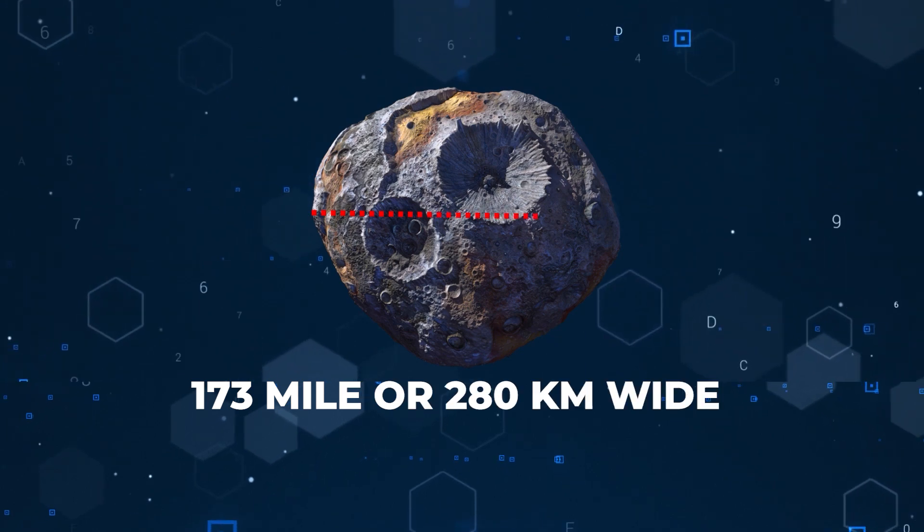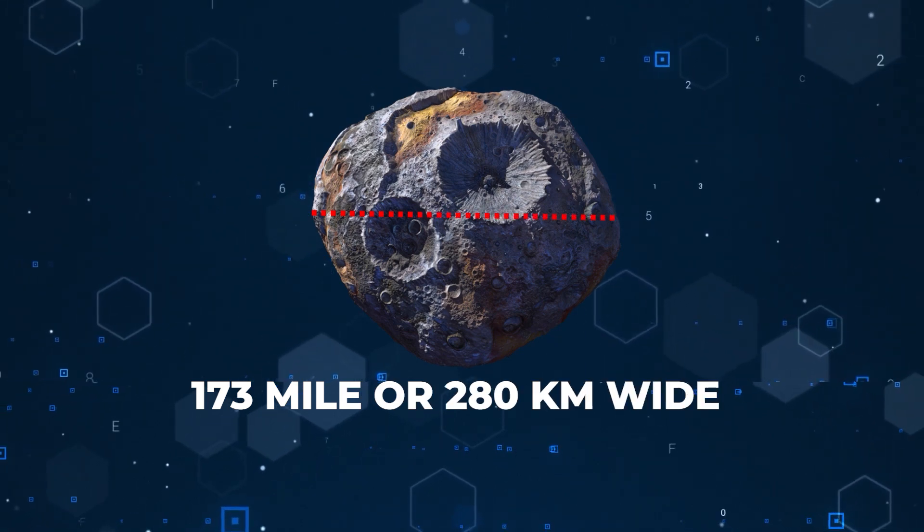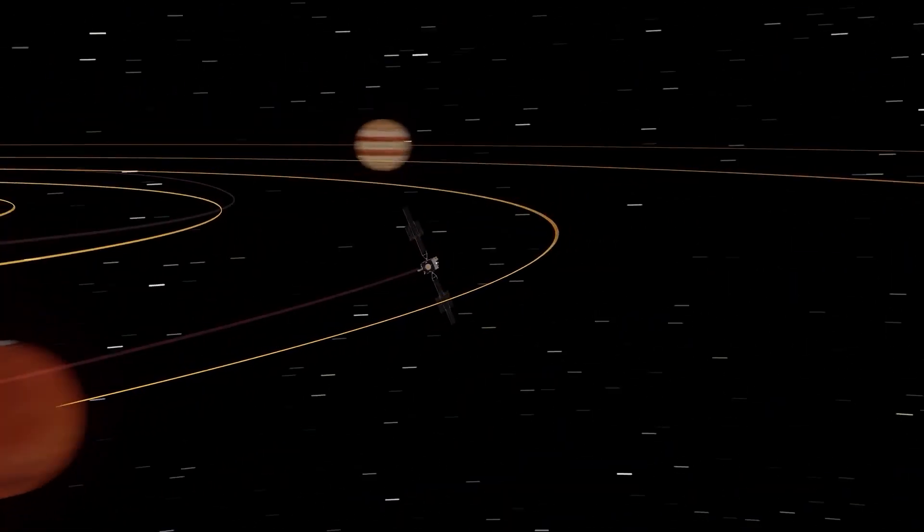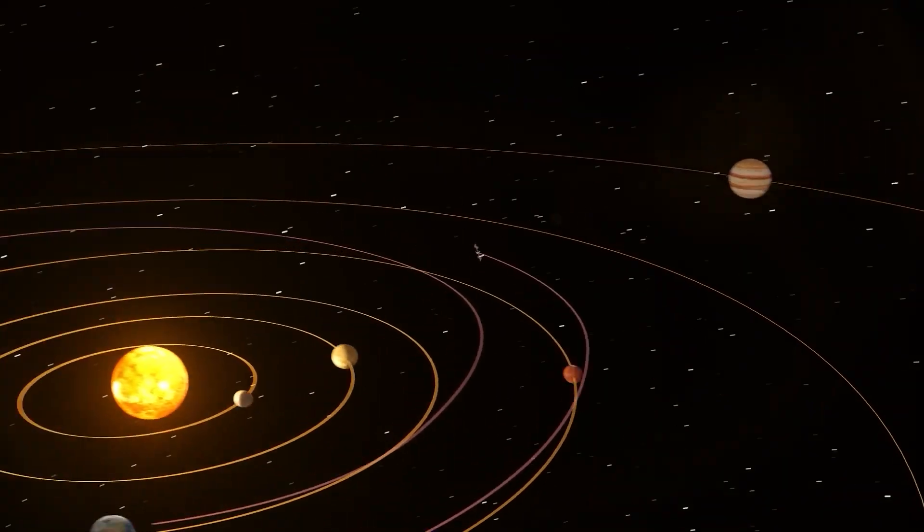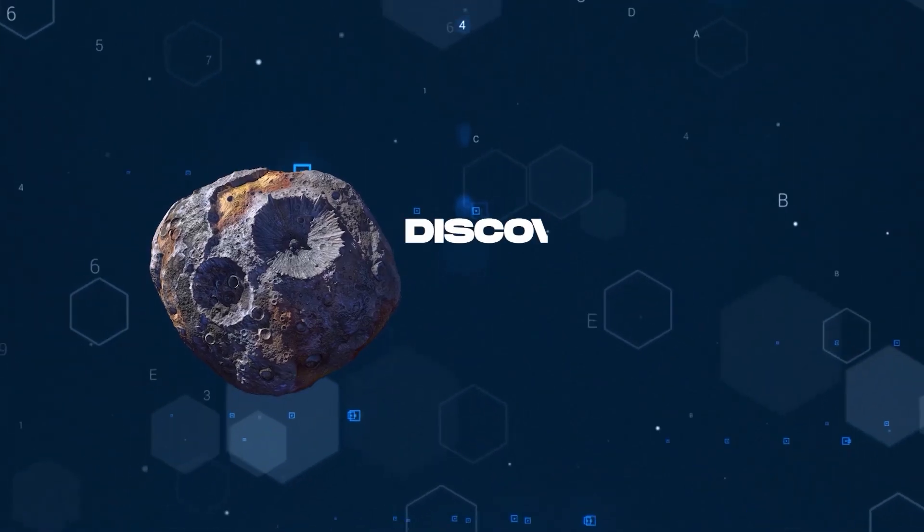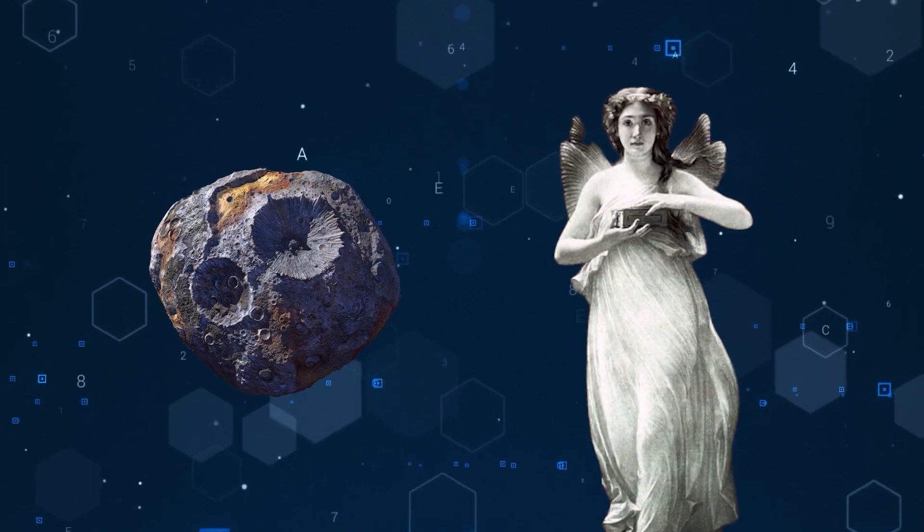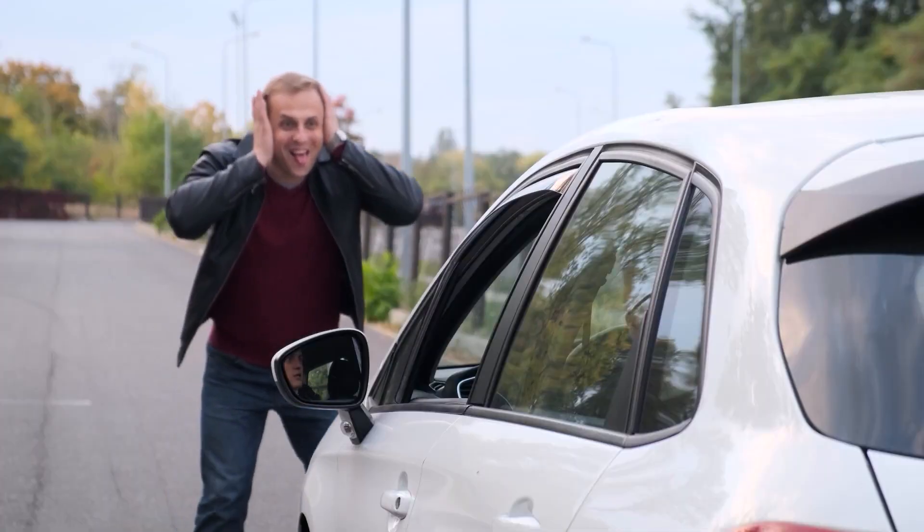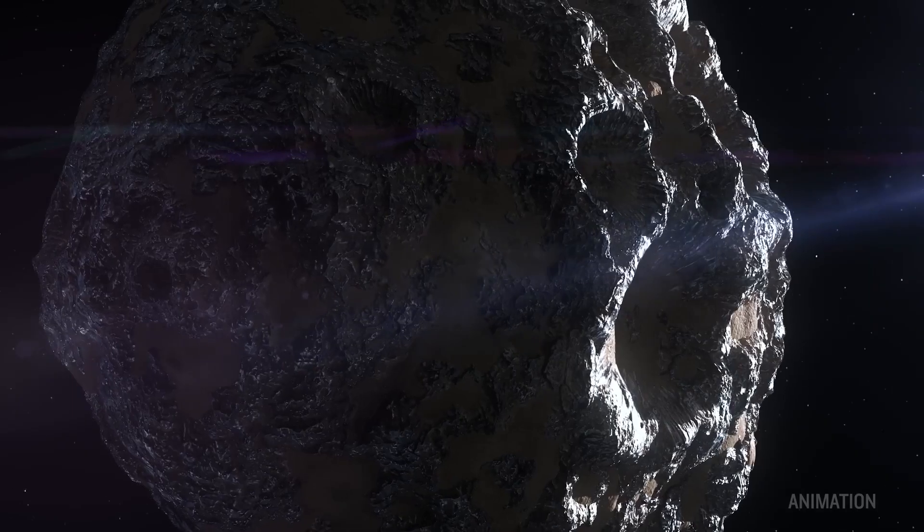Psyche is a 173 mile wide or 280 kilometer wide asteroid that orbits the sun in the outer part of the main asteroid belt between Mars and Jupiter. It was discovered in 1852 and named after the Greek goddess of the soul. But don't let the name fool you.